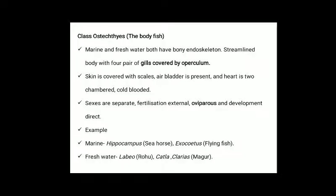Class Osteichthyes — bony fishes: found in both marine and fresh water. They have bony endoskeleton and a streamlined body with four pairs of gills covered by operculum. Skin is covered with scales. Air bladder is present and heart has two chambers. Sexes are separate. Fertilization is external. They are oviparous with direct development.